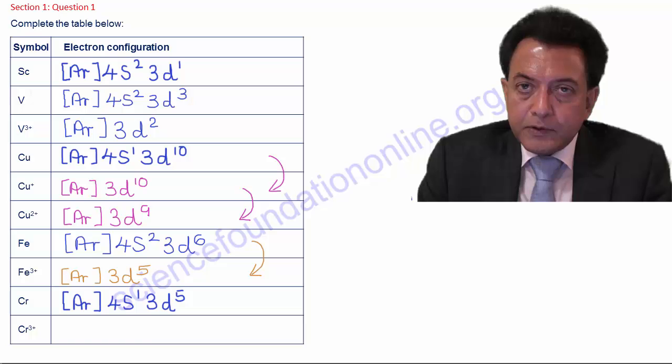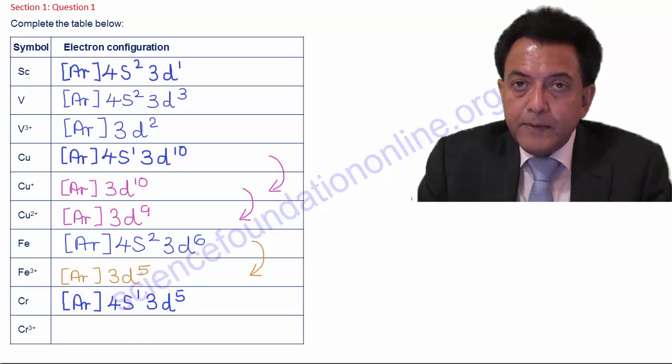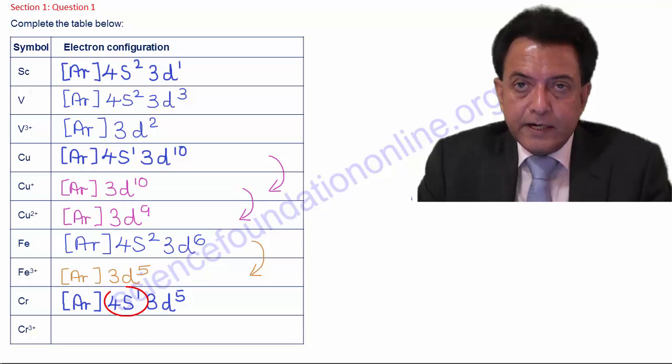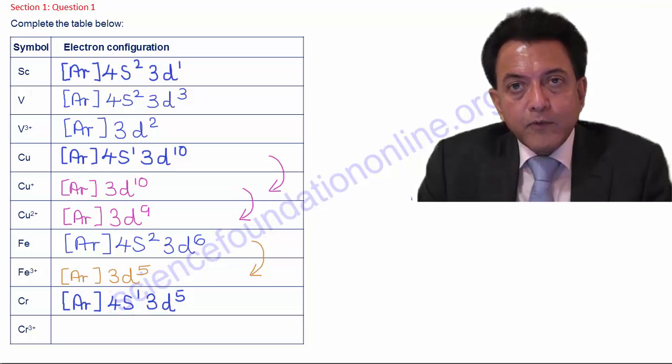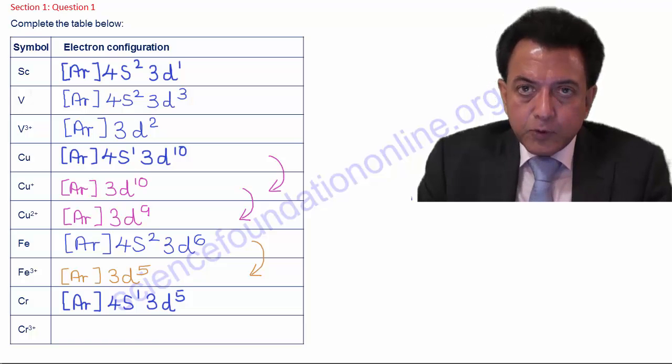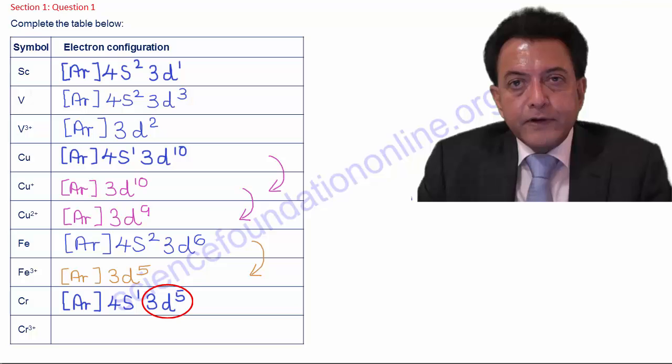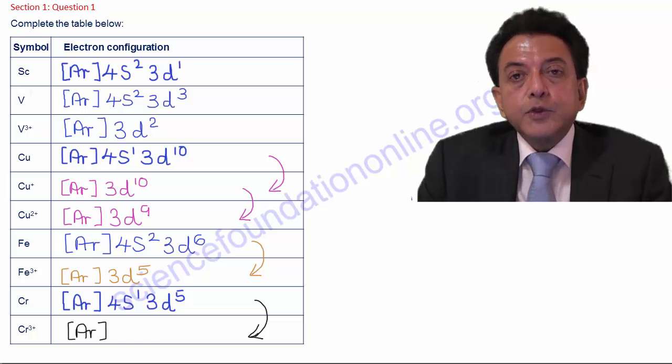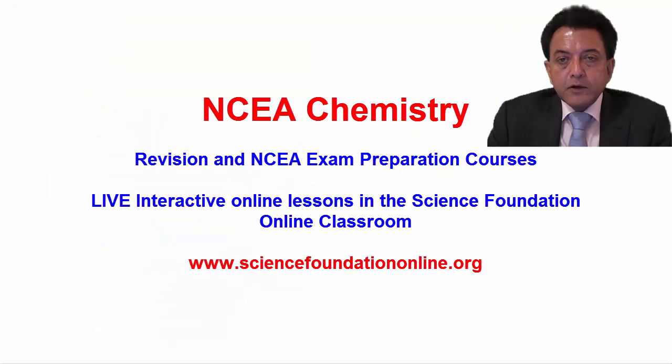Then, with Cr3 plus, begin with the electron configuration of chromium, which was [Ar] 4s1 3d5. Then, remove its one 4s electron first and we need to now remove another two electrons so that we end up with Cr3 plus. And then, two of its 5 d electrons will also need to be removed and this gives [Ar] 3d3. So, in conclusion, you should now have a good understanding of how to obtain the electron configurations of transition metal atoms and ions.